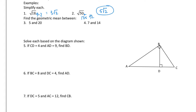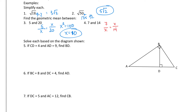For number 3, find the geometric mean between 5 and 20. I set up my geometric mean equation: X squared equals 5 times 20, which is 100, so X equals 10. For number 4, the two numbers are 7 and 14. I get X squared equals 98. X equals the square root of 98, which breaks down into 49 times 2, and the square root of 49 is 7. So 7 root 2 is my answer.